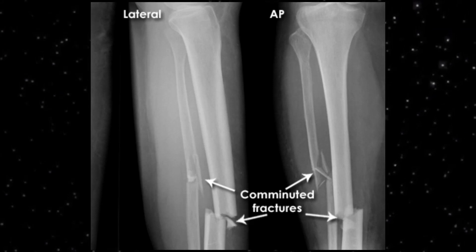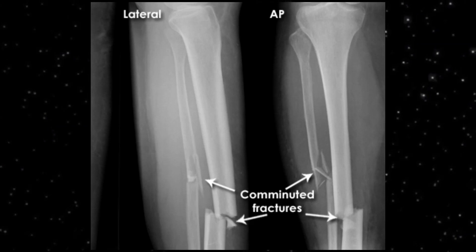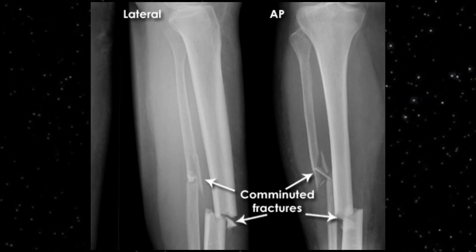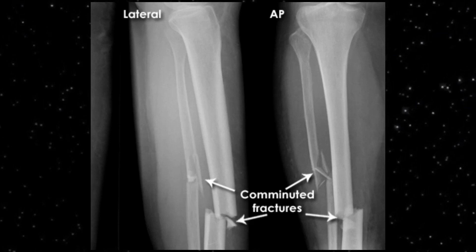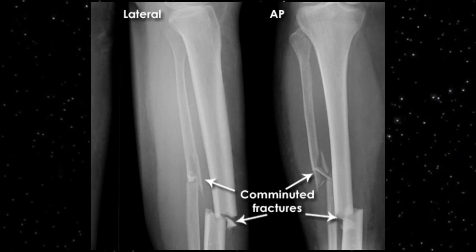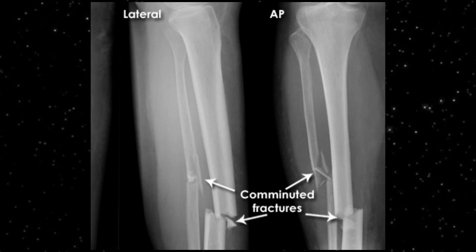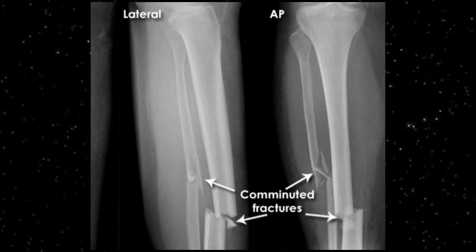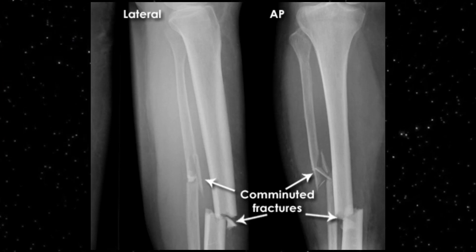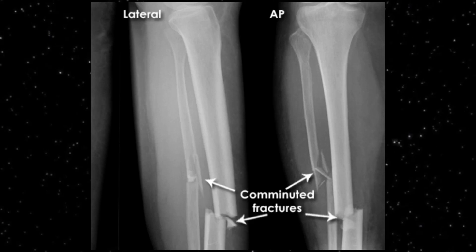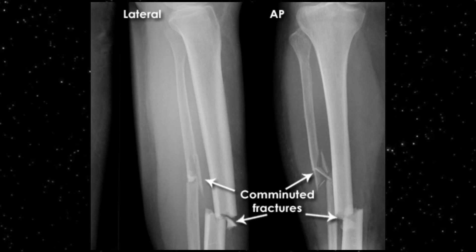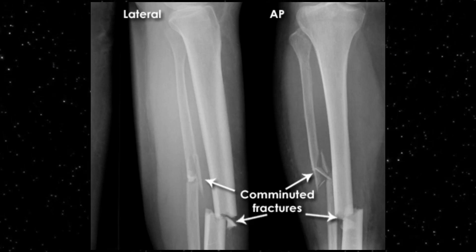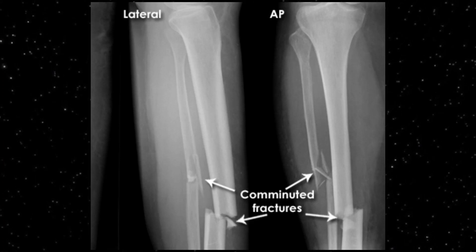Comminuted fracture is a type of fracture where there are more than two separate bone fragments. This radiograph of a mature skeleton of the lower leg shows AP and lateral views with fractures of both tibia and fibula — both are spiral fractures, both are distal fractures, and both are comminuted fractures. When multiple fragments are present, or more than two bone fragments are involved, that is called a comminuted fracture.